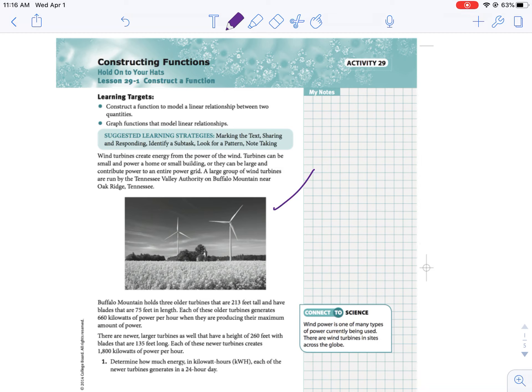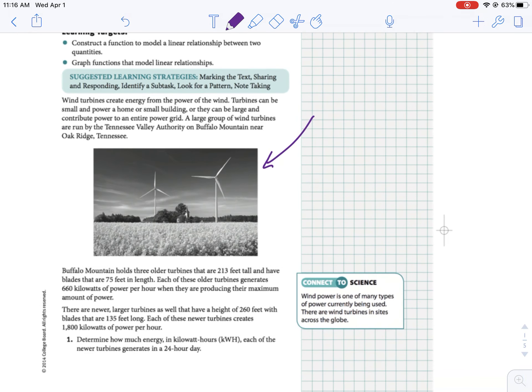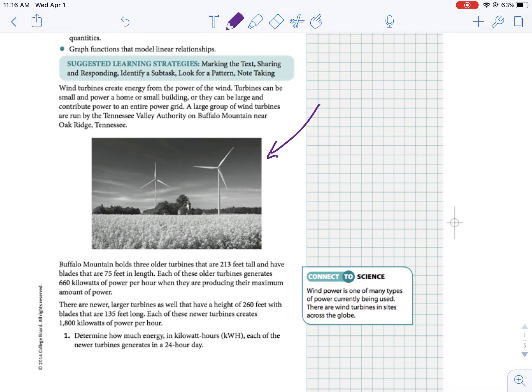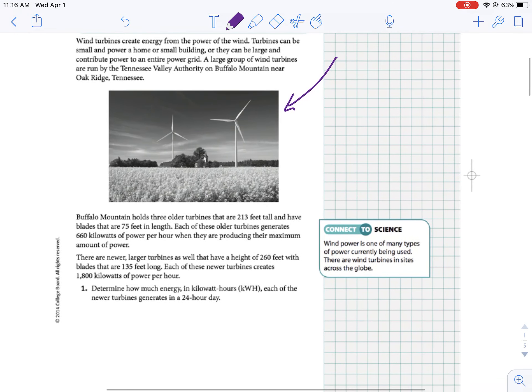All right, so today we're going to talk about wind turbines. There's a picture of the wind turbines down below. Basically what happens is wind turbines spin with the wind and produce energy. A lot of farms use it. Schools are actually starting to use it because it's a cheaper way than paying ComEd or some energy company.